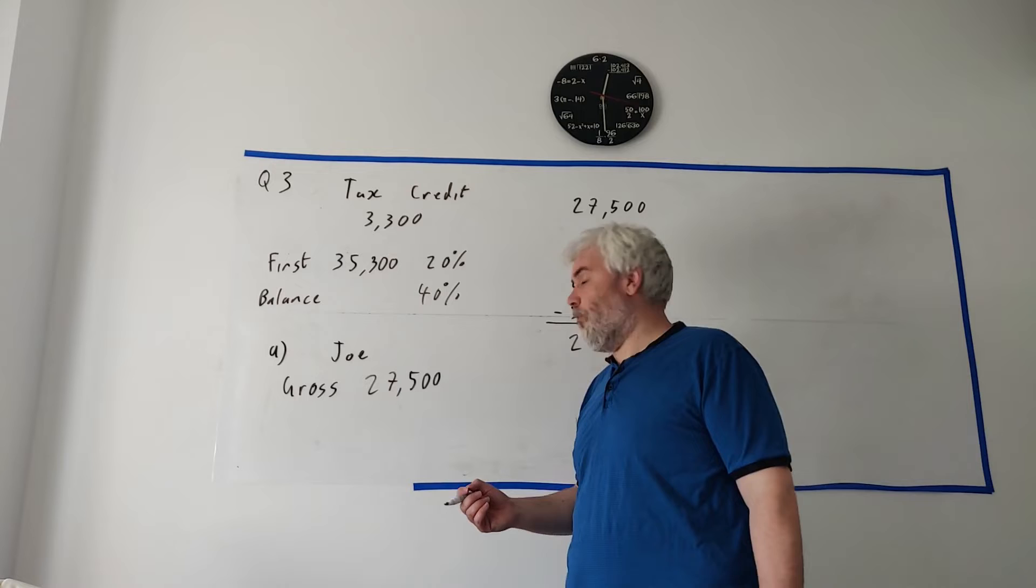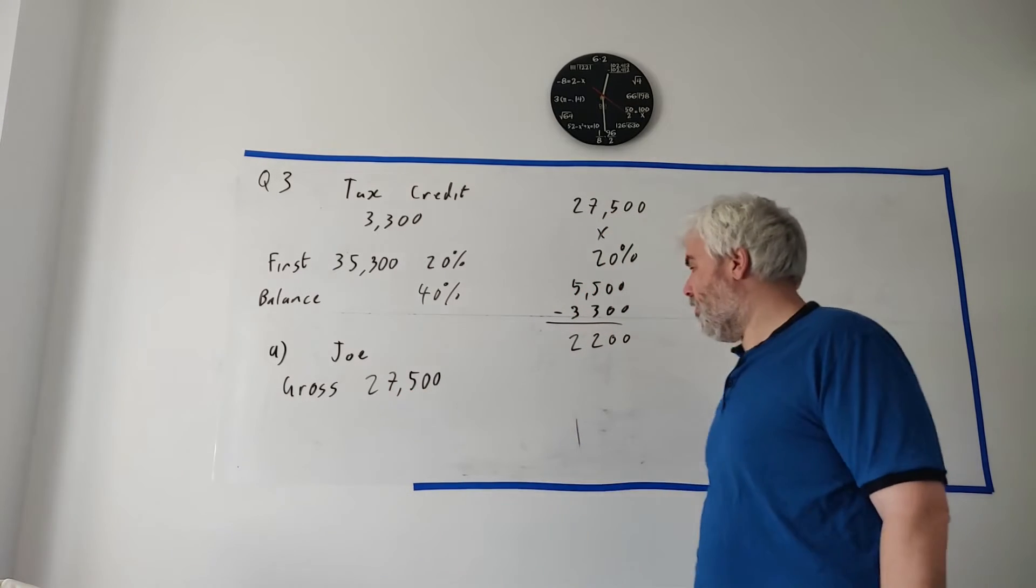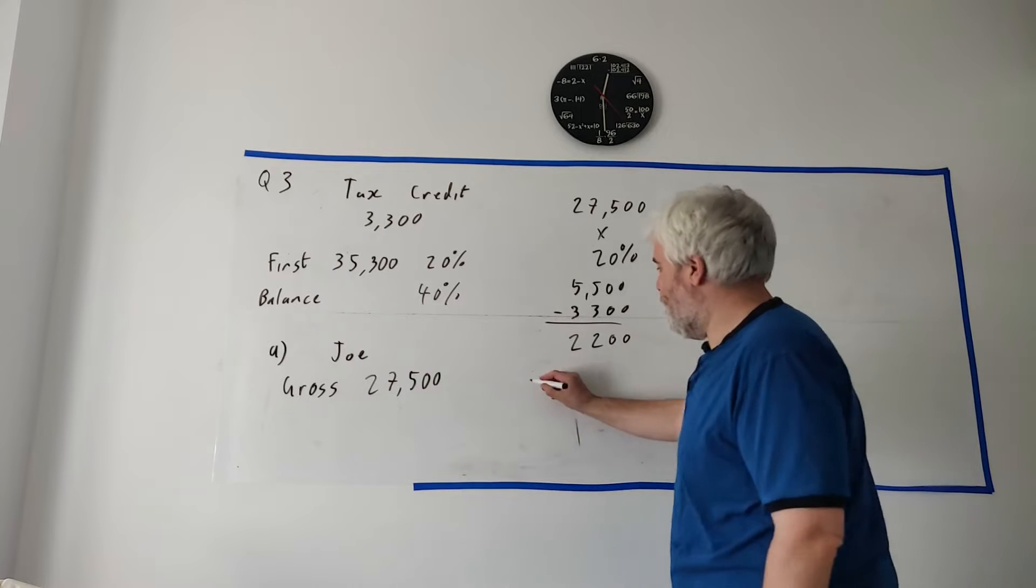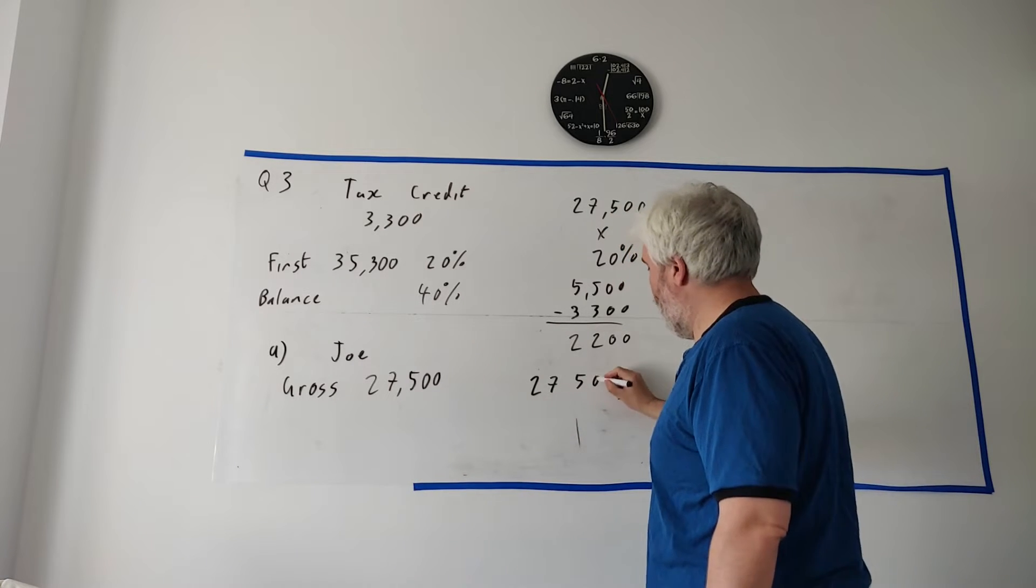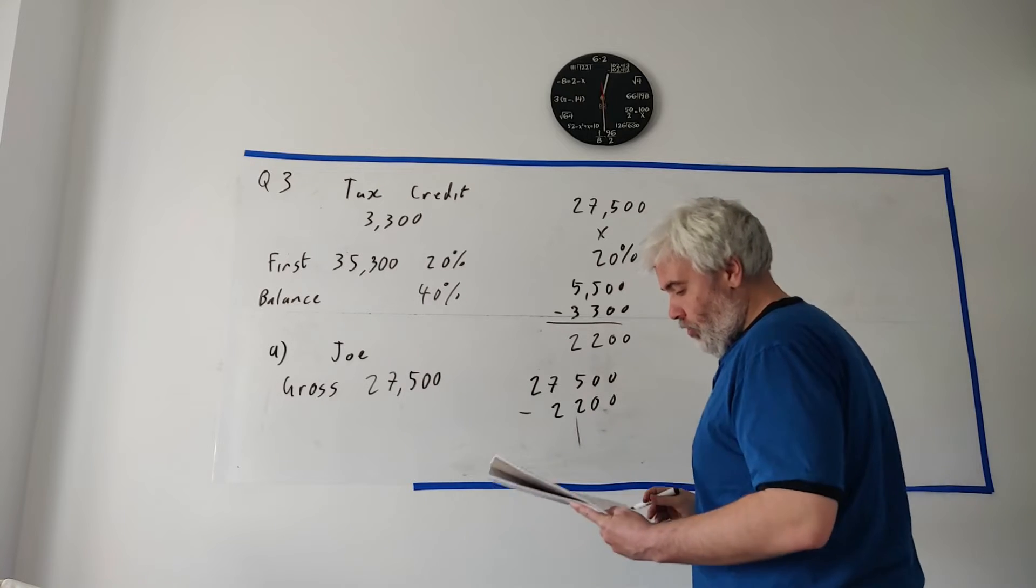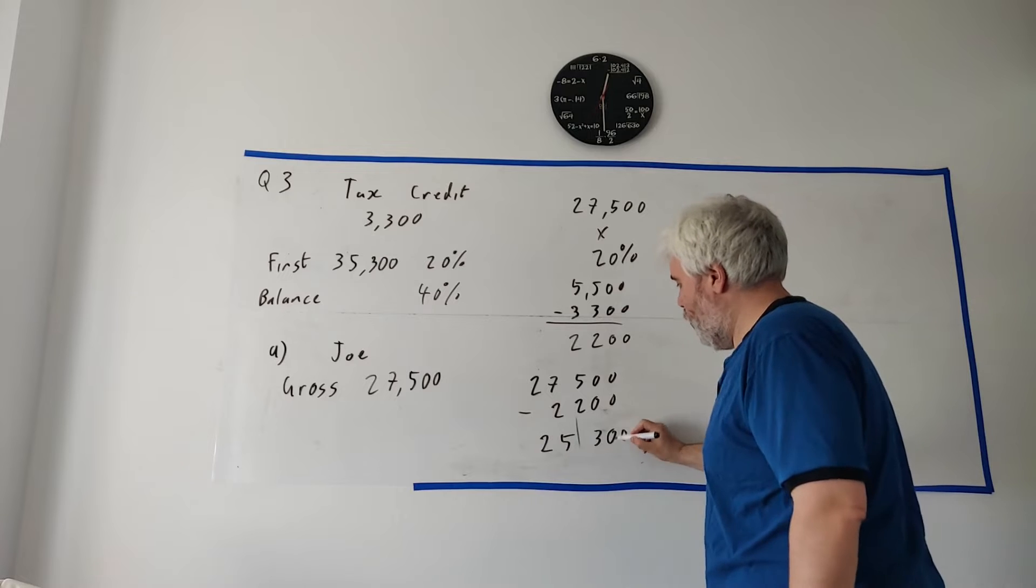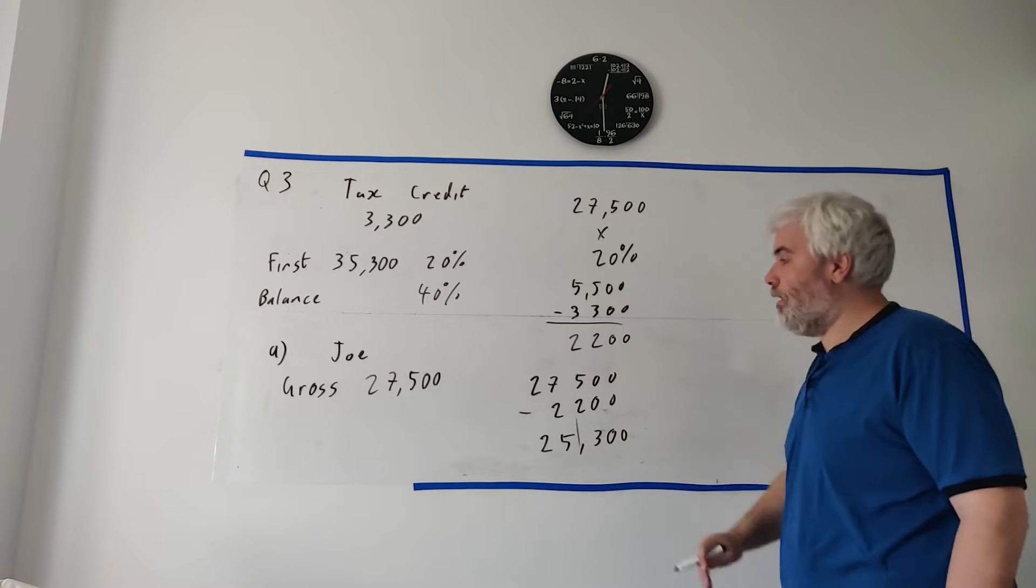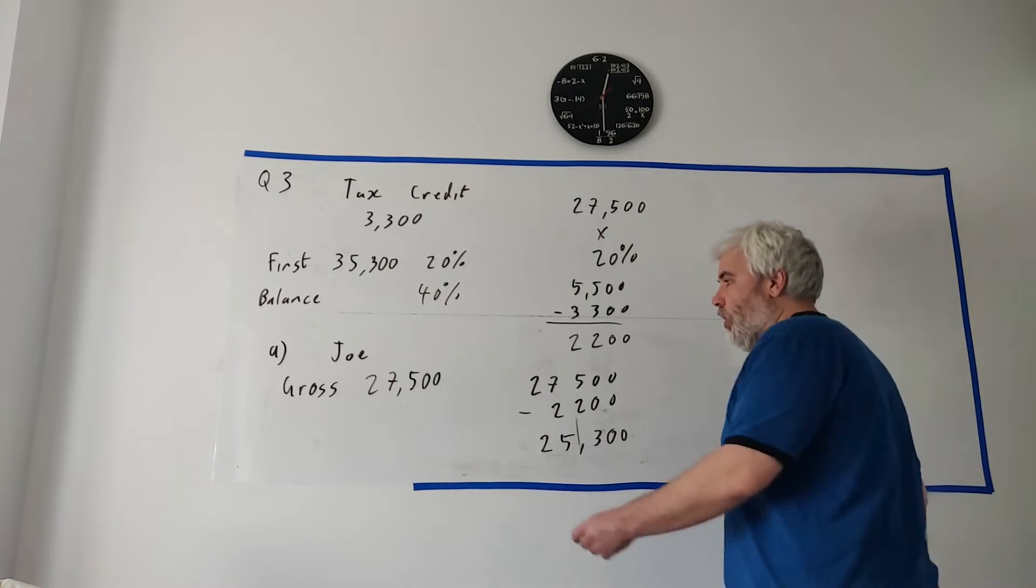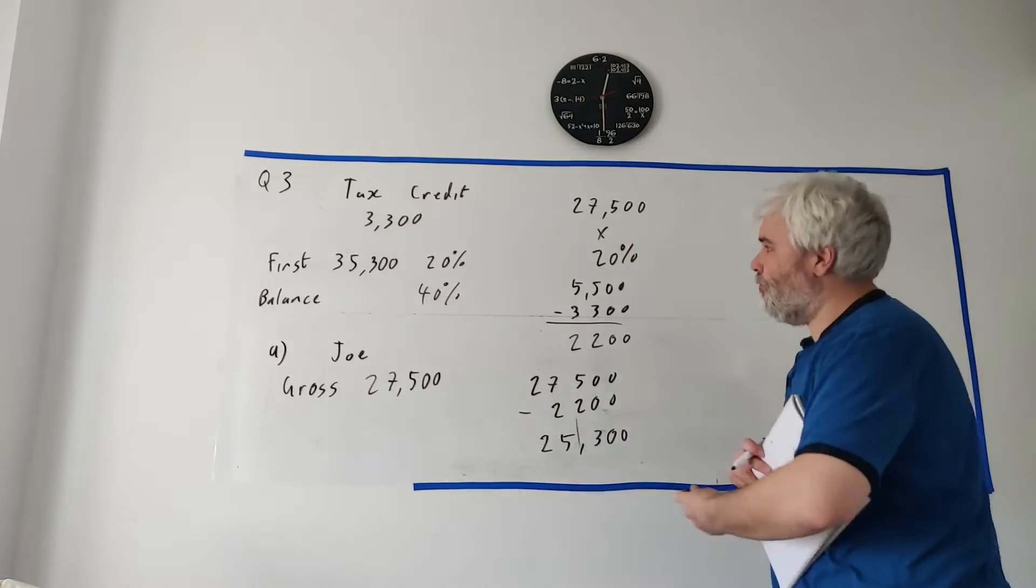They ask you how much his net wage was. Before tax was 27,500. He pays this tax. So 27,500 minus 2,200 is equal to 25,300. That's our answer. That's his net pay. He thought he was getting paid this much but he's actually only getting paid this much after tax.